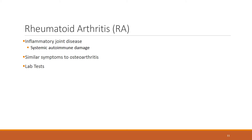Rheumatoid arthritis is a separate disorder — it is an inflammatory joint disease and a systemic autoimmune disease. The autoimmune attack targets self-connective tissues, specifically the synovial membrane. Patients have symptoms similar to osteoarthritis, but there are important differences in how the joints are affected.